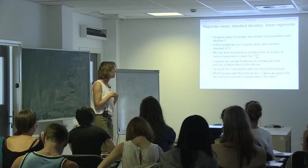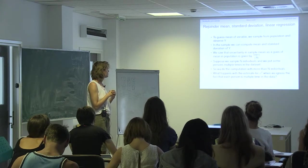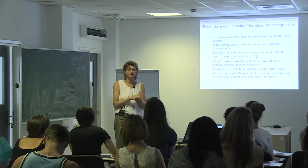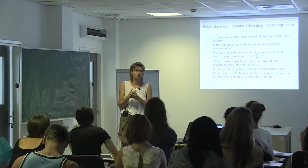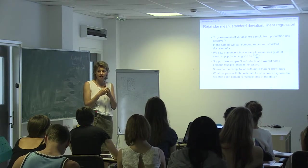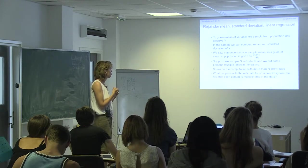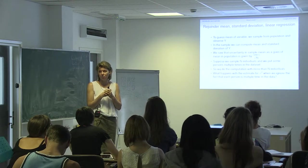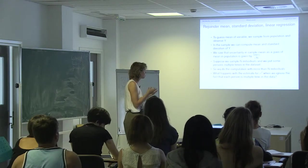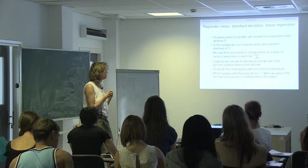We discussed mean, standard deviation, and linear regression in the second and third lecture. What we always want to do is know the truth. We have a large population and there is a true model, but we cannot observe the truth. We cannot measure everyone, so we sample. In this sample, we compute the mean and the standard deviation — the sample mean and sample standard deviation. The sample mean is then a guess of the true mean in the population. To know how certain we are about the sample mean — how far it can be from the true mean — we use the standard deviation.